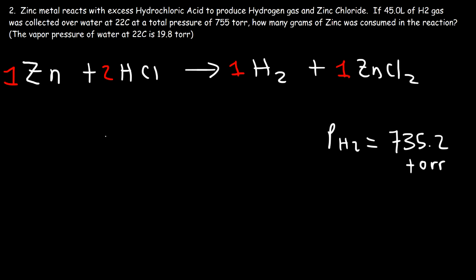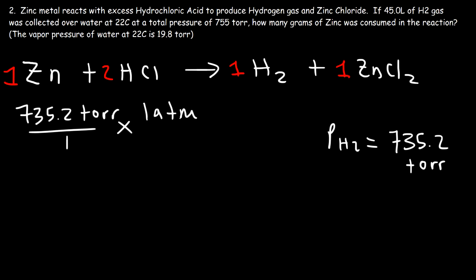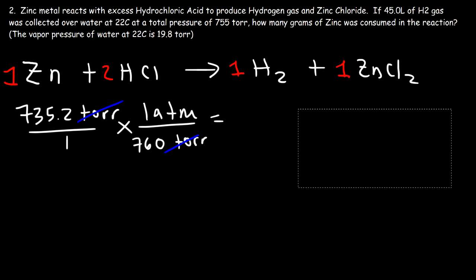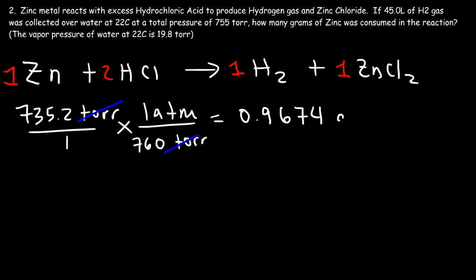Now let's convert that value to ATM. Just like before, we divide by 760. So 735.2 divided by 760 is 0.9674 ATM.